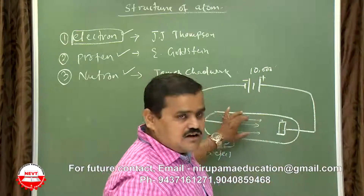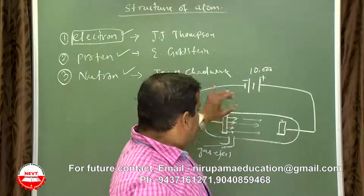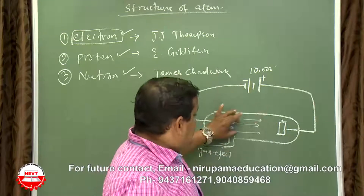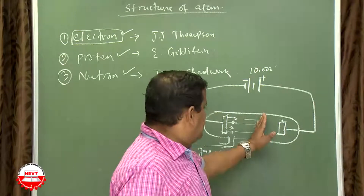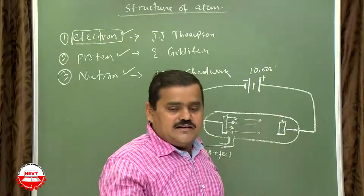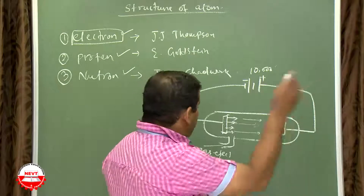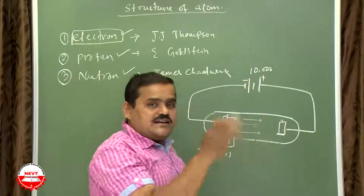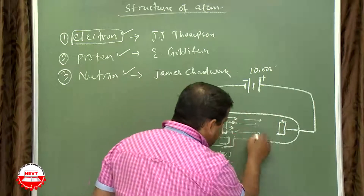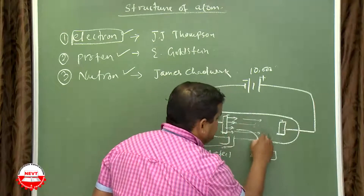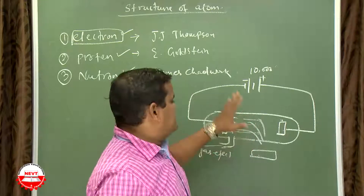Since these rays move from cathode (negative) towards anode (positive), the rays consist of some particles which are negatively charged. I will prove this: if you put a moving wheel in the path of these rays, it will strike the wheel and the wheel will start moving — meaning the ray consists of particles. Also, these rays deflect in an electric field towards the positive electrode, confirming they are negatively charged.